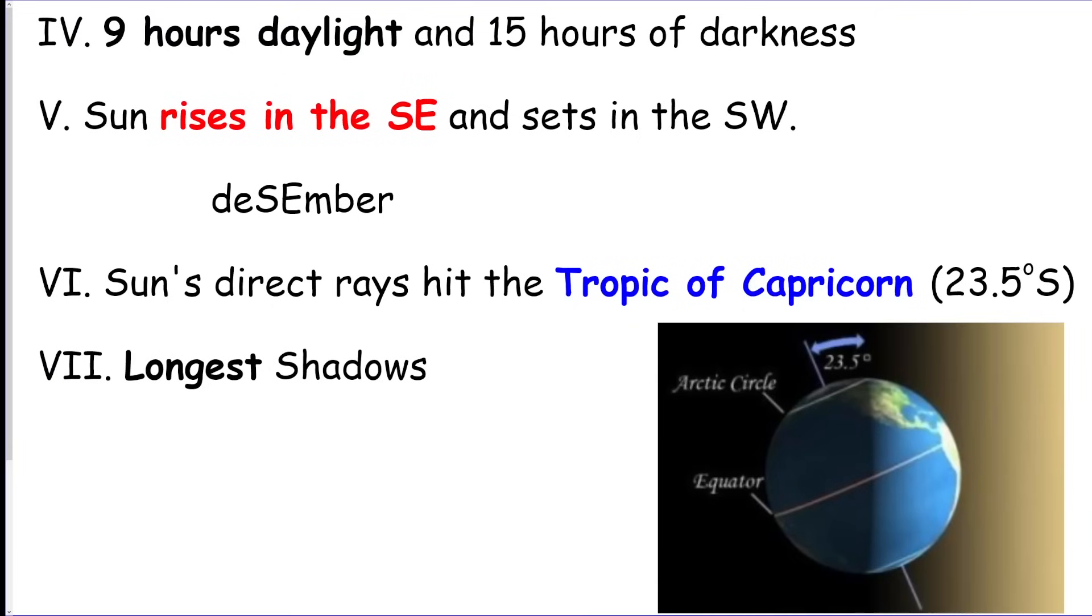Winter solstice, December 21st, shortest duration of insolation. This is going to be all the opposite of summer, so I'm not going to sit here and read all this. I will show you: remember December trick, rises in the southeast, you spell December wrong, and know where your direct ray is, Tropic of Capricorn.